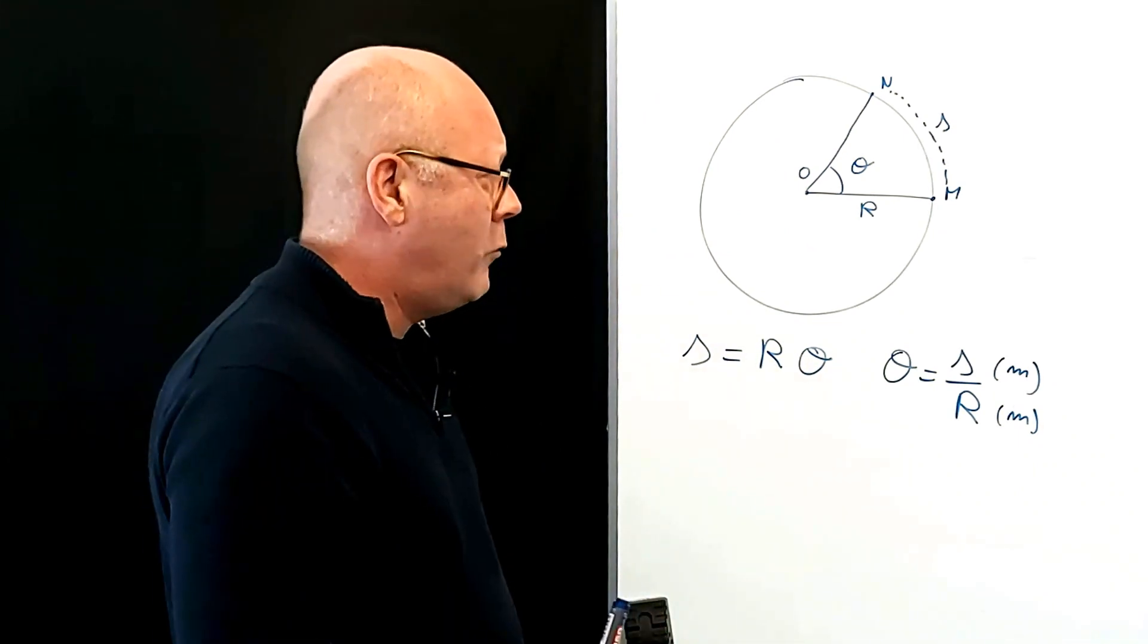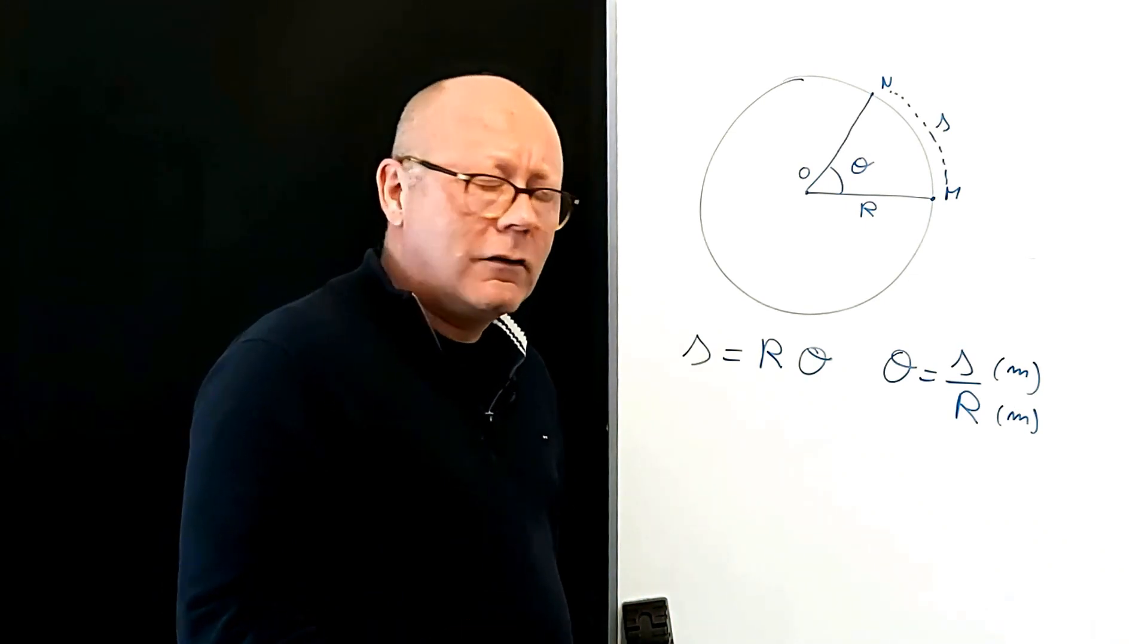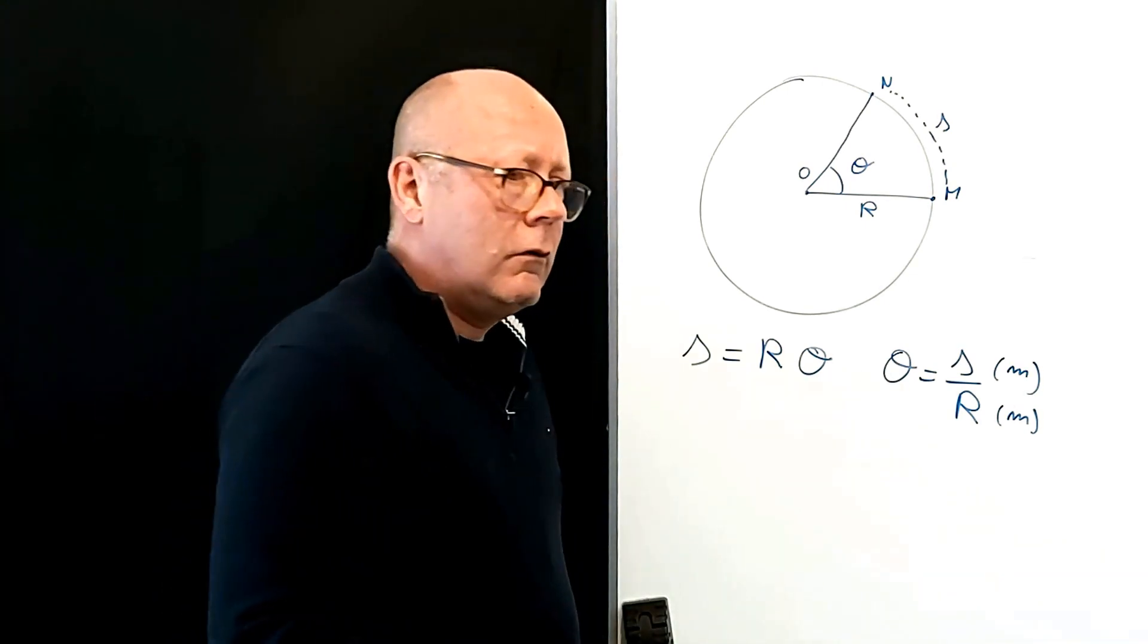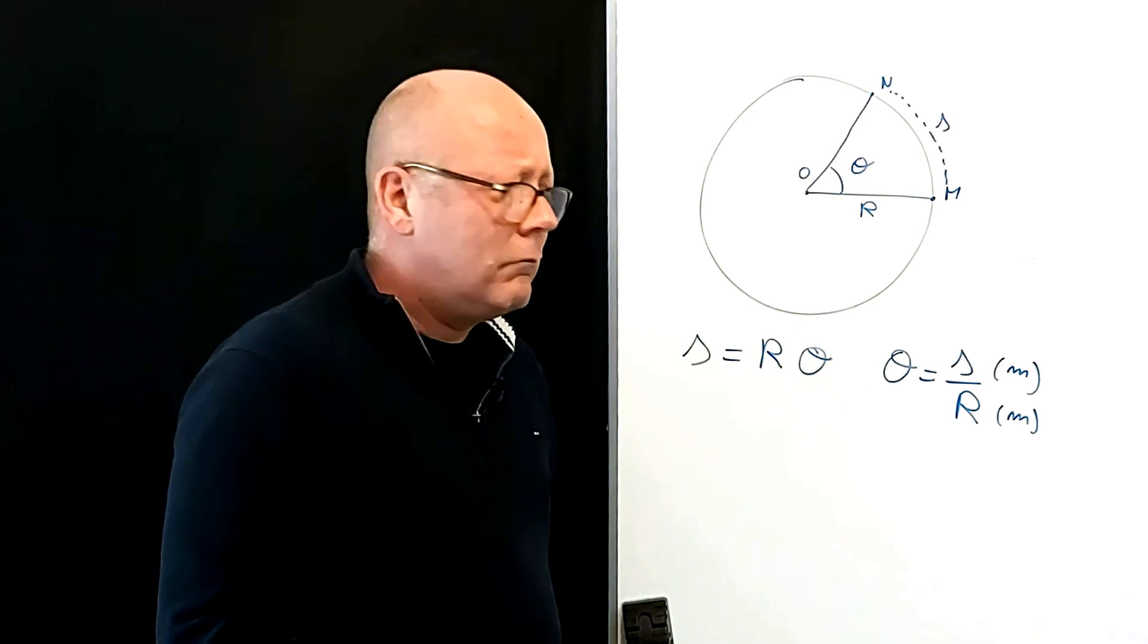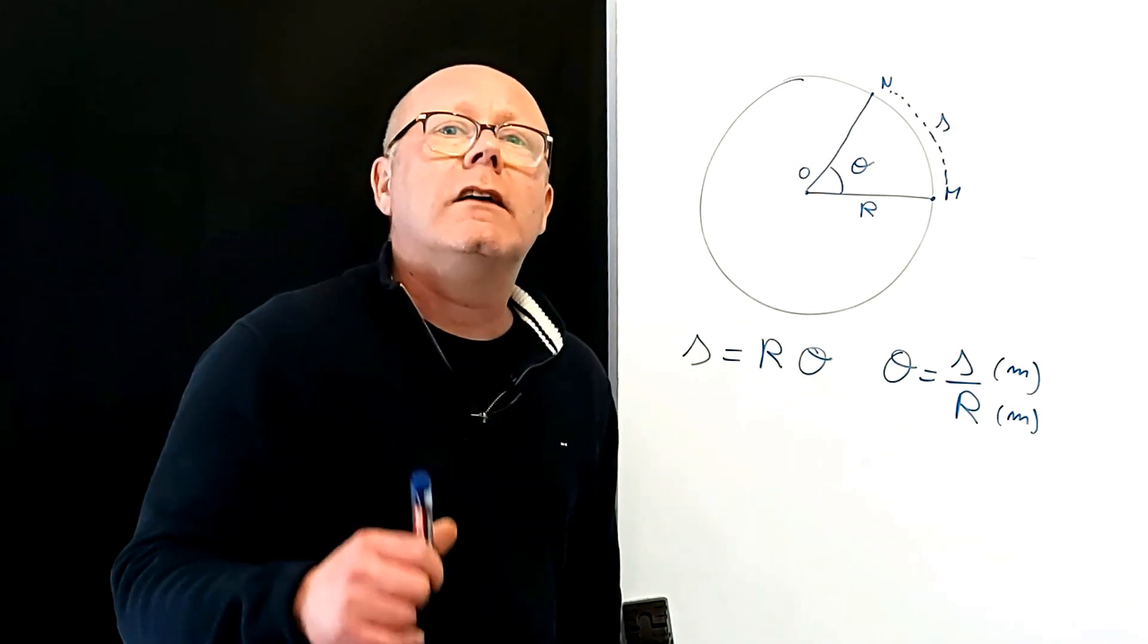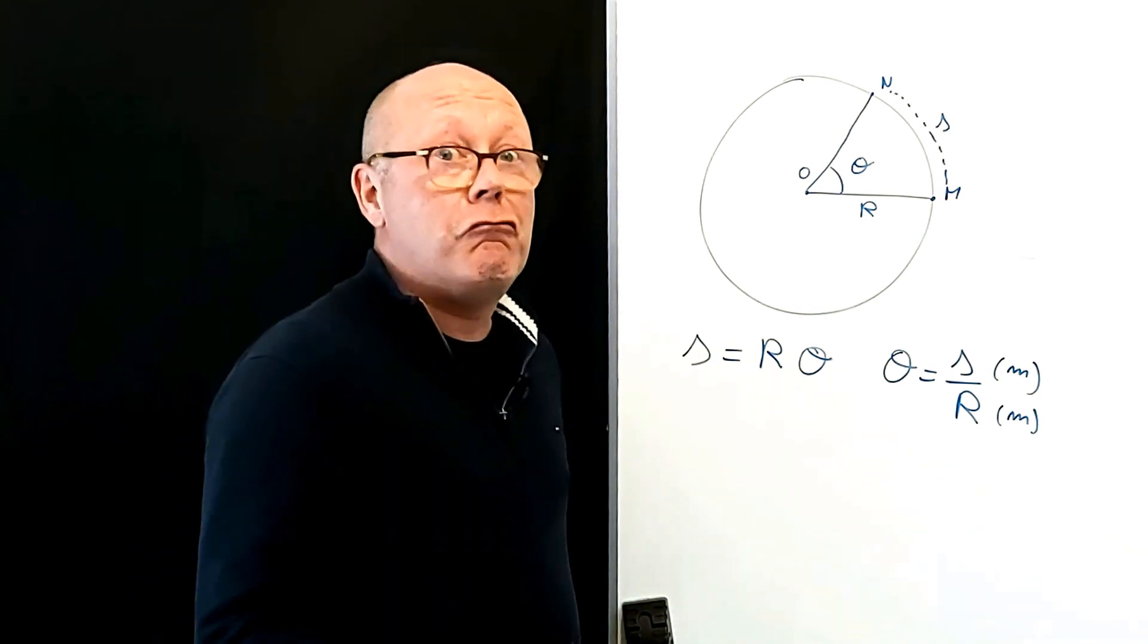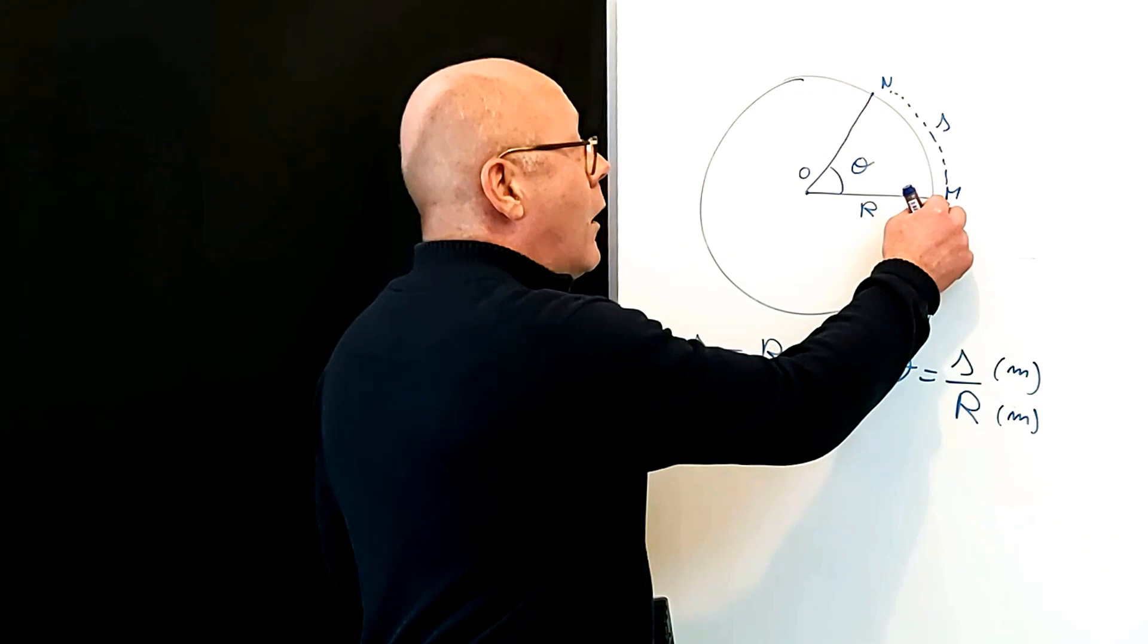Wait a minute. Meters over meters? That's a ratio. And a ratio has no units. So the angle does not have any units. Yup. An angle has no units because it's a ratio. An angle is defined by the ratio of an arc over a radius.